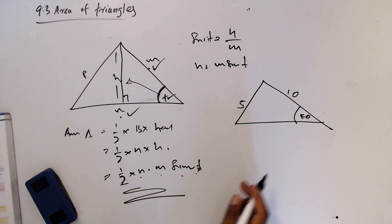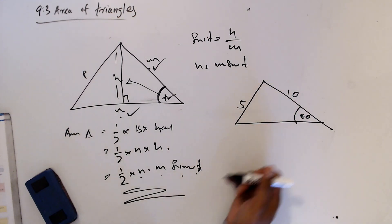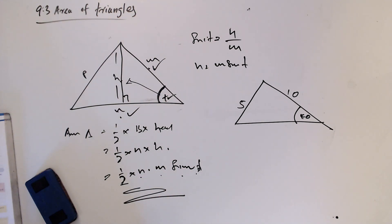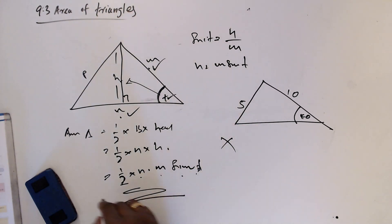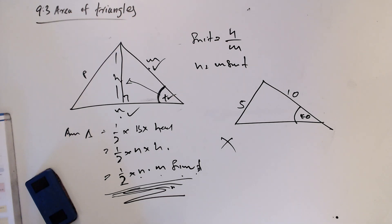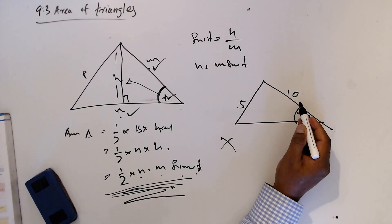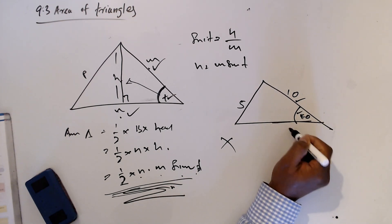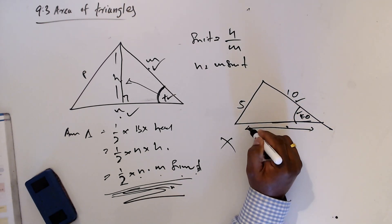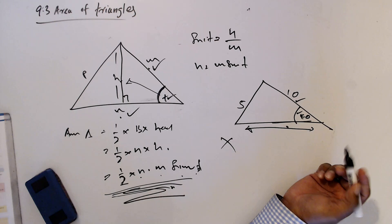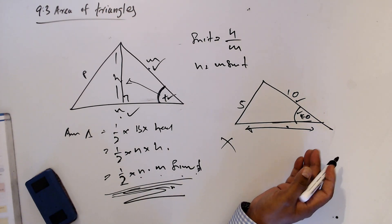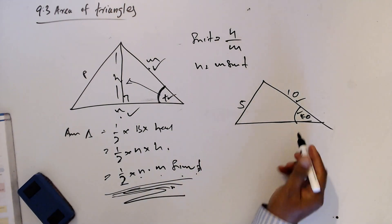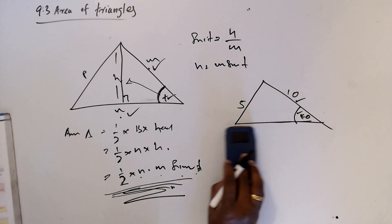For example, if you have angles of 40 degrees and sides of 10 and 5, can you find the area straight away? No, you can't use the formula directly. You have to use different techniques — perhaps the sine rule — to find a missing side or angle first. You cannot apply half a b sine C straight away if the angle is not between the two known sides.